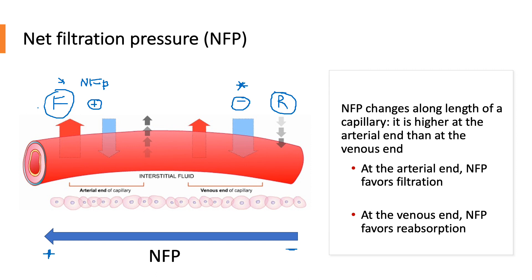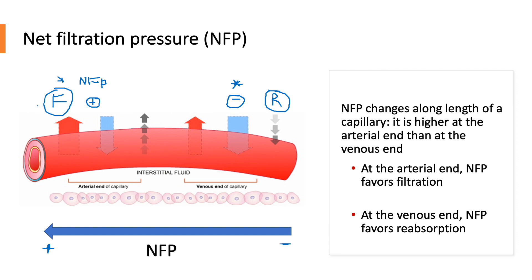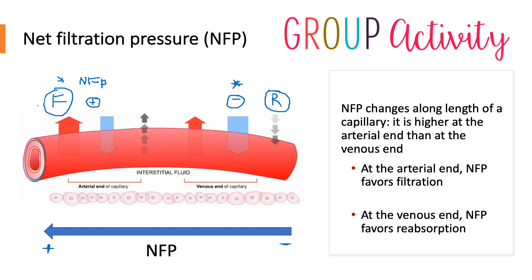This will be the in-class activity for tomorrow. Working in small groups, whether in-class or online, you'll be given actual values for blood hydrostatic pressure and blood colloid osmotic pressure, and you'll calculate the net filtration pressures on both the arterial and venous ends of the capillary to determine which end favors reabsorption and which favors filtration.